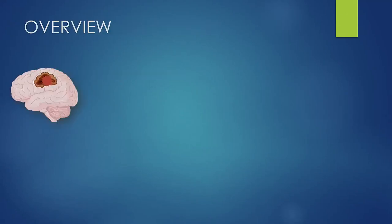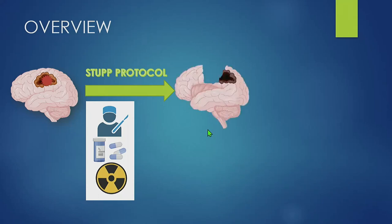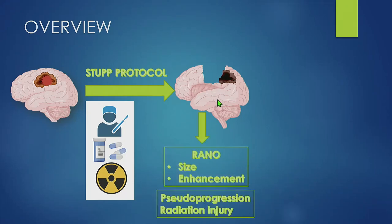This is the general roadmap of a patient who comes to us for a brain scan. The patient is diagnosed with a brain tumor and goes to the so-called STOP protocol, which is the standard of care, consisting of surgery as resective as possible and chemoradiotherapy. The tumor is resected as safely as possible, and the patient can come back with another enhancing lesion. For evaluation of this recurrence, we apply the RANO criteria, which are based on the size and enhancement of the lesion. We can face imaging changes related to treatment, such as pseudoprogression or radiation injury.